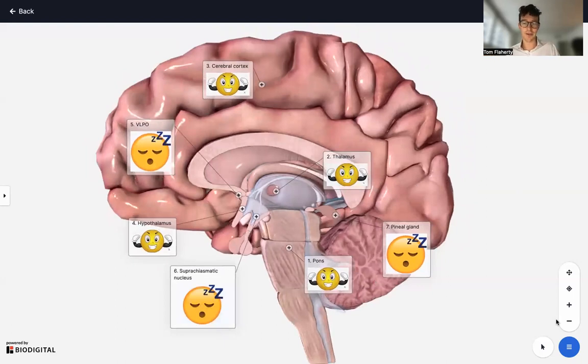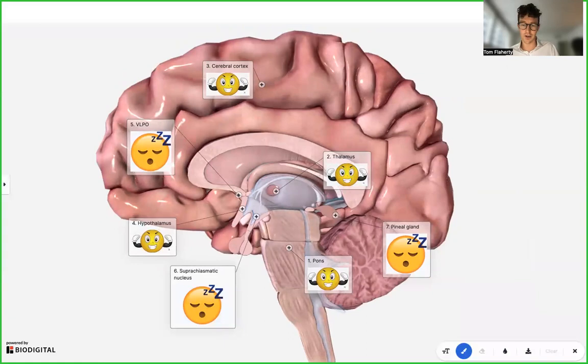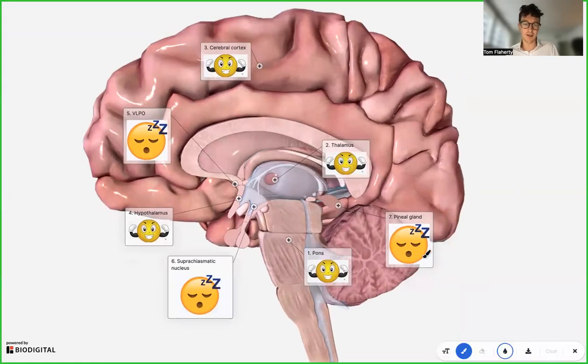I'm going to break it down using the draw feature. Wakefulness starts here in the upper pons, sends a signal up to the thalamus, which then sends a signal up to the cerebral cortex saying 'let's be awake, let's be active.' Acetylcholine is the neurotransmitter—that's called your ascending arousal system.